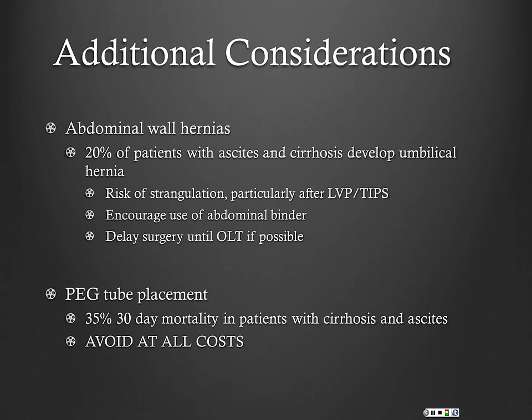Two other things to consider: patients with ascites — particularly large-volume ascites — often develop abdominal wall hernias, most commonly umbilical hernias, seen in up to 20% of patients. There's a risk of strangulation particularly after large-volume paracentesis or TIPS — as the peritoneum decompresses and shrinks, bowel can become strangulated. Always watch out for this.